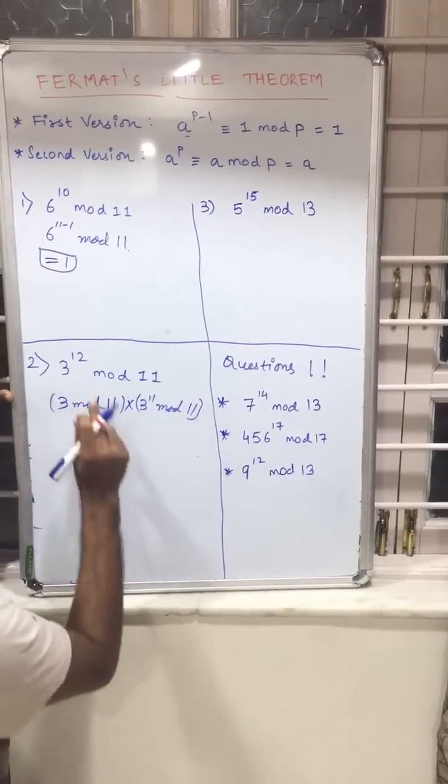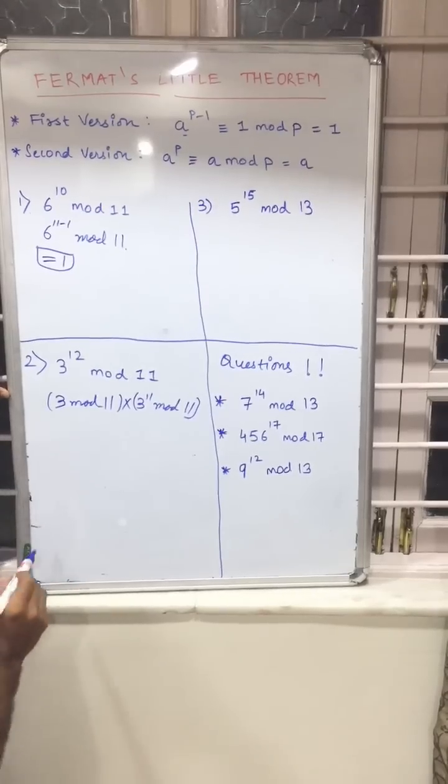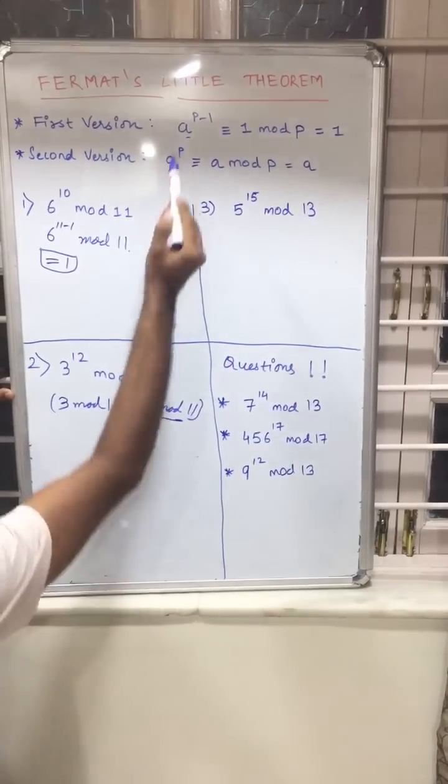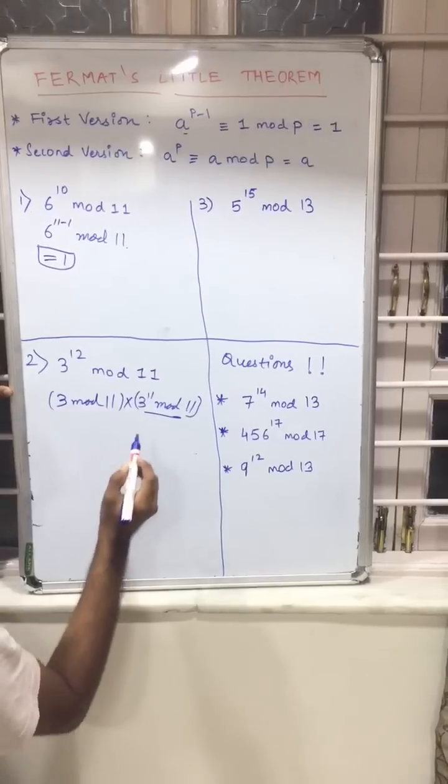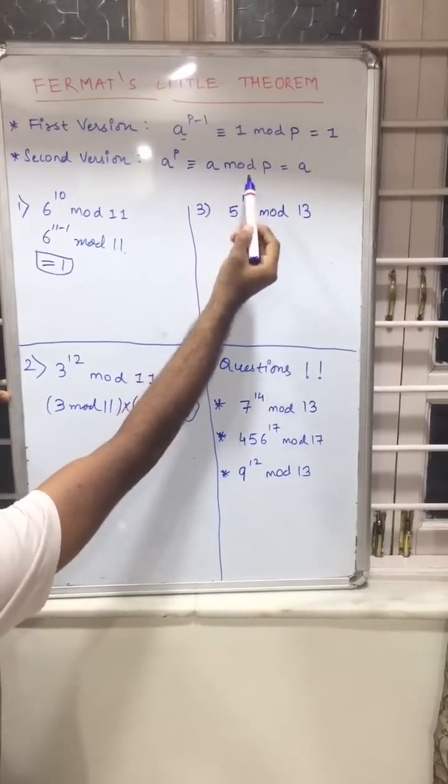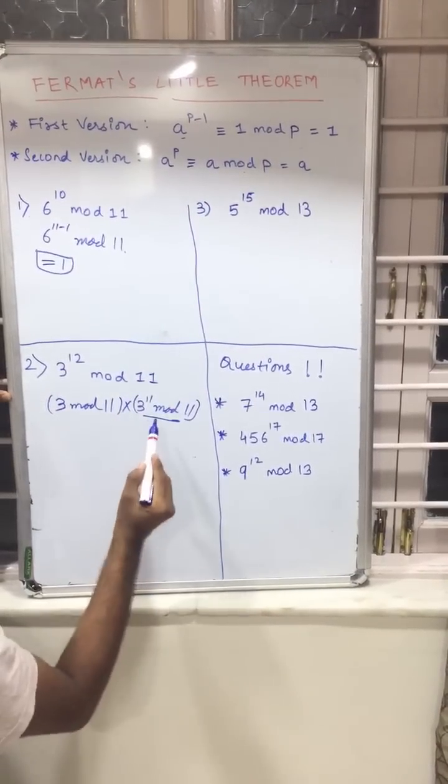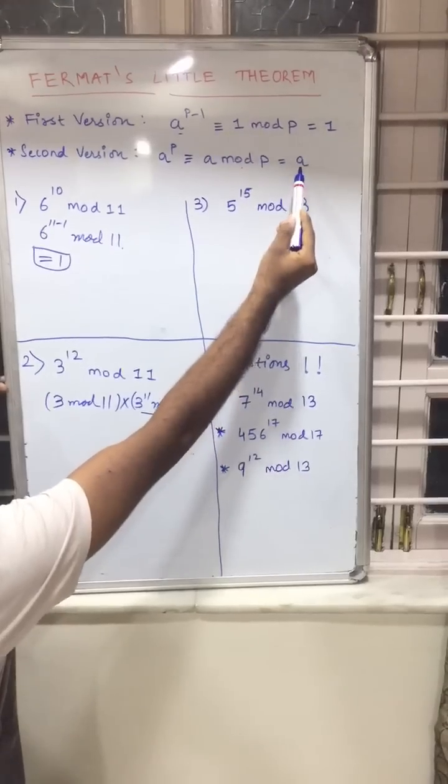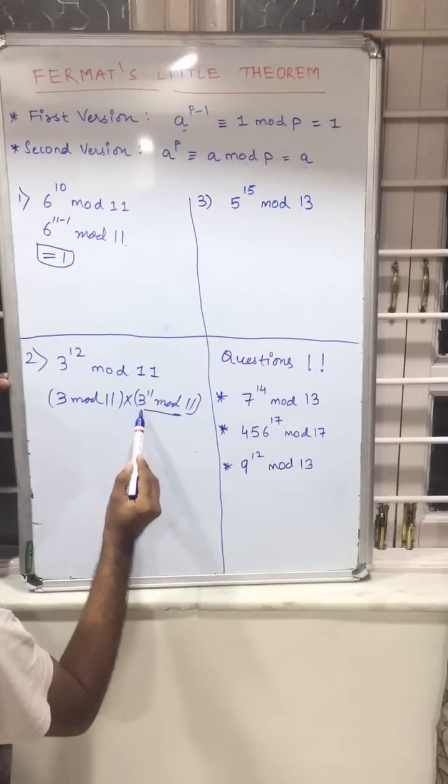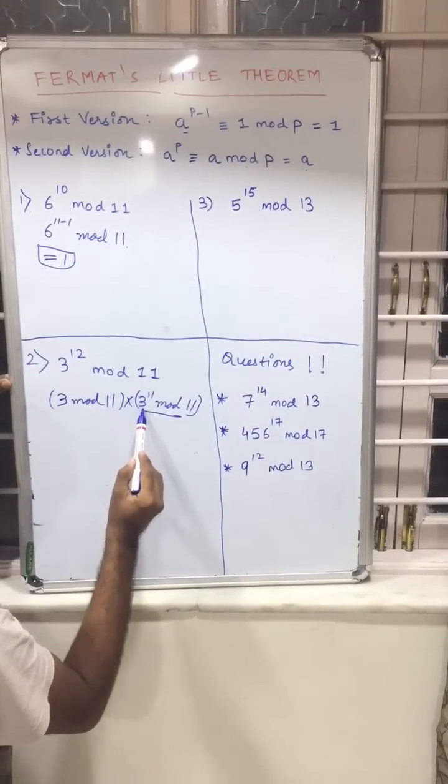So here we did a little bit of smart work. As we can see that this equation again matches the second version. So here our answer will always be equal to a, so our answer over here a is related as 3.